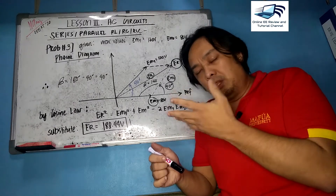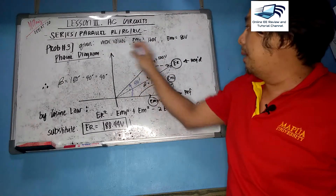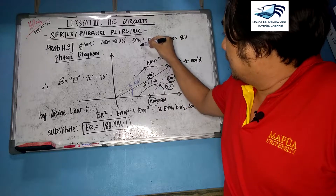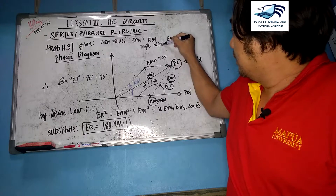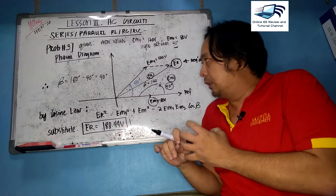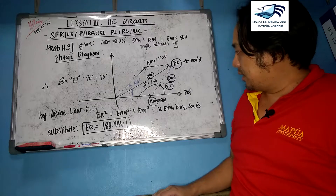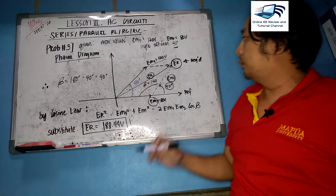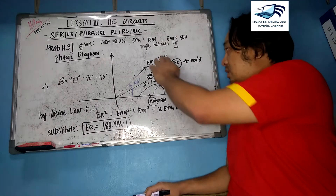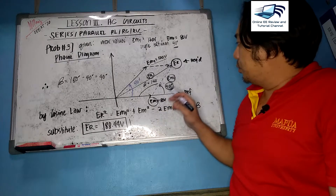We need the resultant in terms of maximum value, so no conversion to RMS is needed. The given maximum values are Em1 = 120 V and Em2 = 80 V, separated by a 40-degree angle. To understand this, we draw the phasor diagram showing Em1 at 120 V and Em2 at 80 V with a 40-degree angle between them. Our goal is to find their resultant.